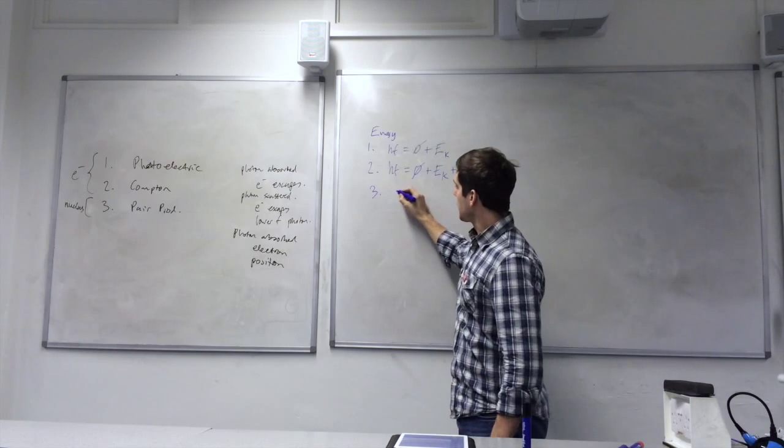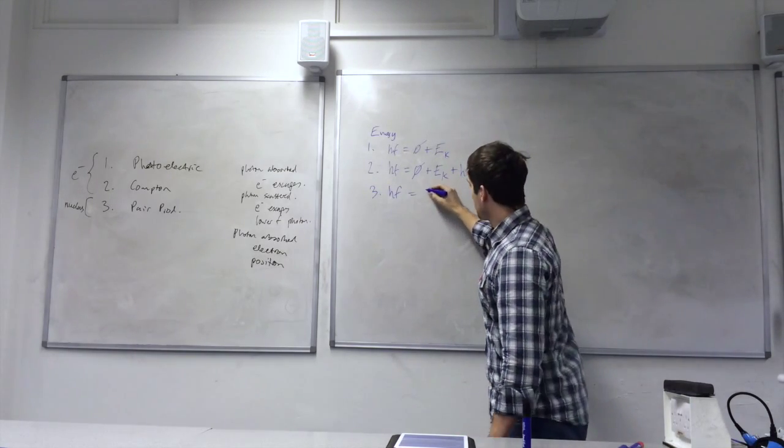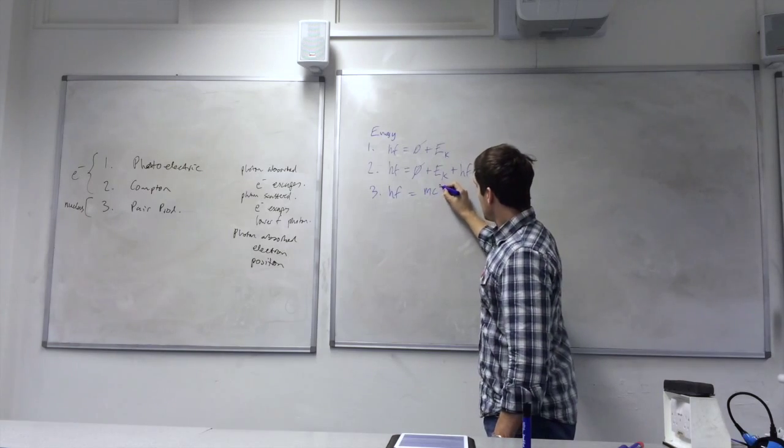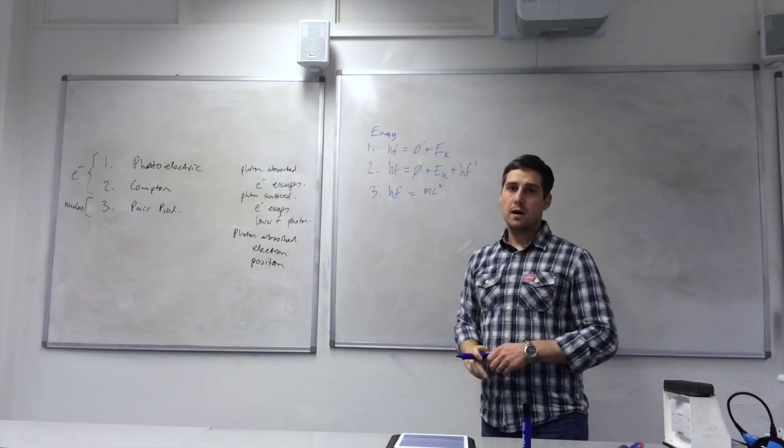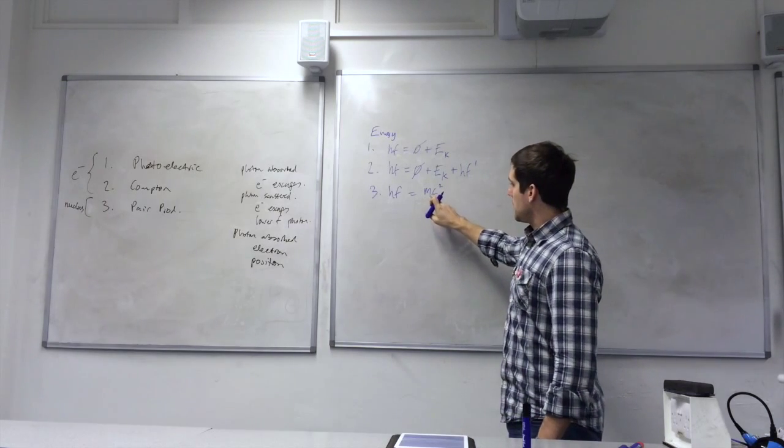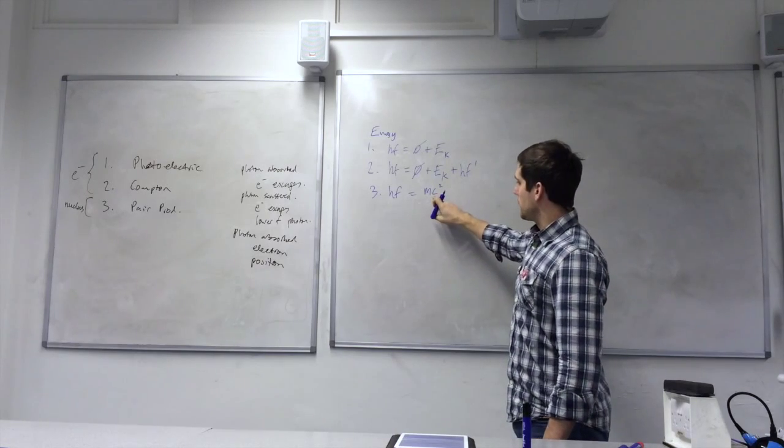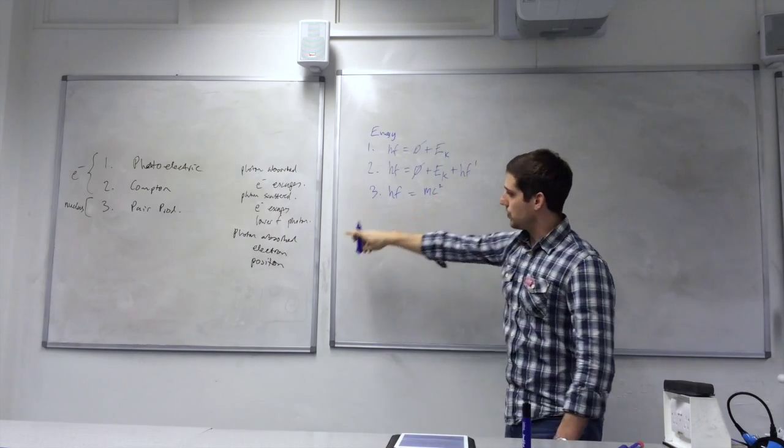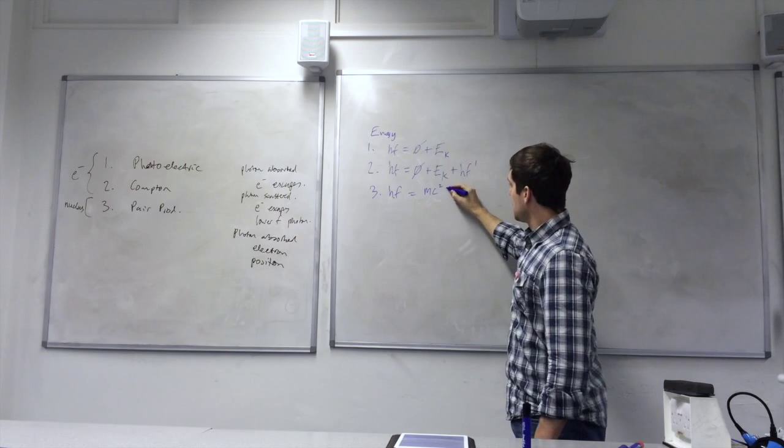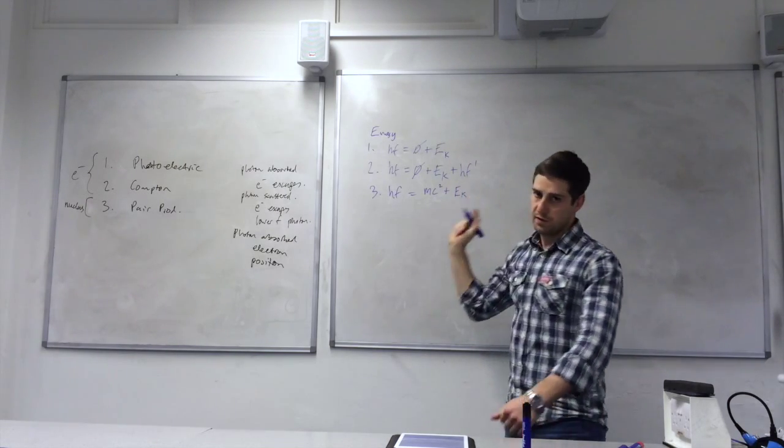Pair production. Photon energy is turned into, according to Einstein's mass energy equivalence, this is the energy equivalent for one of the electron or the positron that's created, plus the kinetic energy, half mv squared.